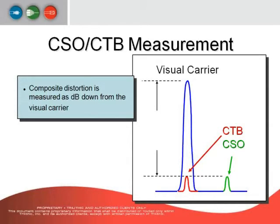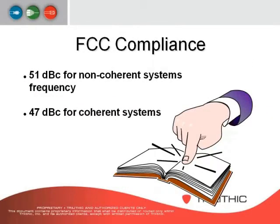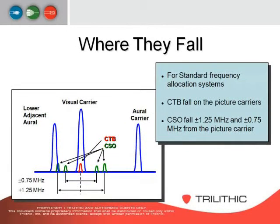CSO and CTB manifest in different areas. Your CTB falls directly under the video carrier, and CSO falls to the side — to the skirt of the video carrier. The FCC compliance for non-coherent system frequencies is 51 dB; it's 47 dB for coherent systems. For a standard NCTA system, CTB falls directly under the video carrier, and CSO falls at 0.75 and 1.25 MHz, both above and below the video carrier.